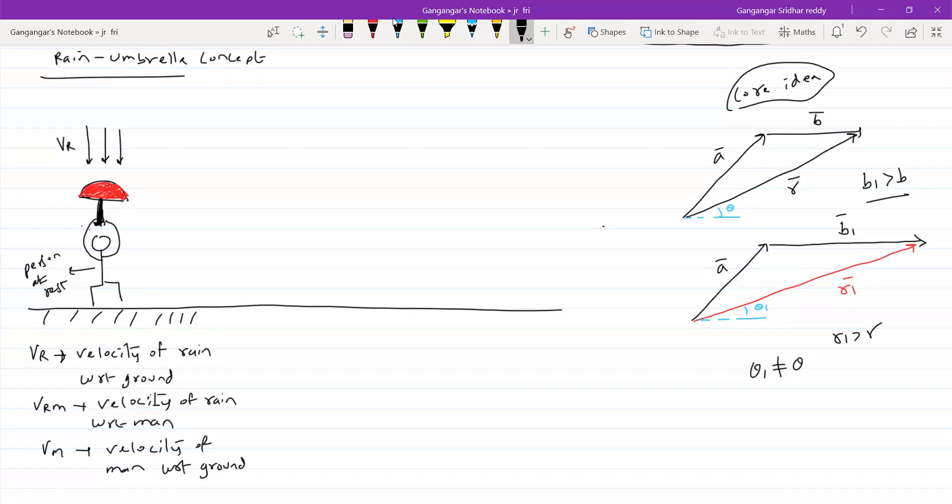Now the person is in motion. They will start moving on the ground. Let's take some values - velocity of rain be 10 meter per second, velocity of man with respect to ground also 10 meter per second. How should we hold umbrella and with what speed will the raindrops strike? I'll directly write the basic equation: vrm bar equals vr bar minus vm bar. I think it's over - your entire relative velocity is done.